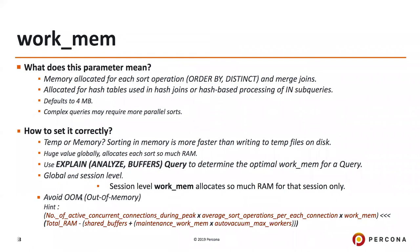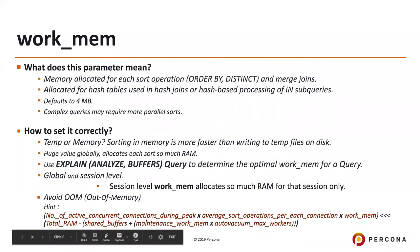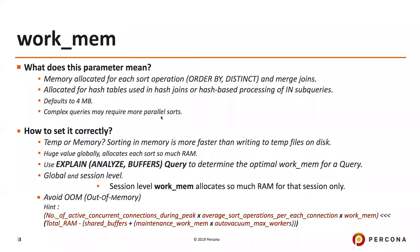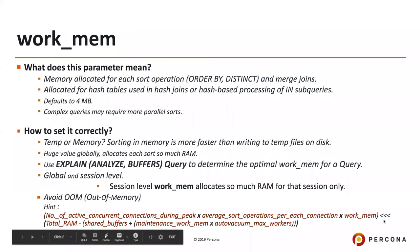One hint: if you know how many active concurrent connections could be established during peak, and the average sort operations for each connection — because a query could also do parallel sorts — then: (active concurrent connections × average sort operations × work_mem) should be much less than total RAM minus shared_buffers. Similarly, maintenance_work_mem × autovacuum_max_workers must also be considered. You can set work_mem at the session level to allocate that RAM only for that session, avoiding out-of-memory situations.